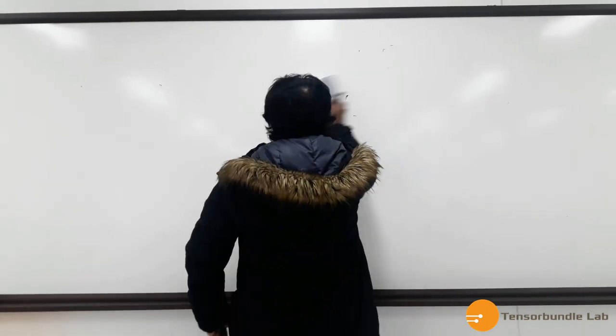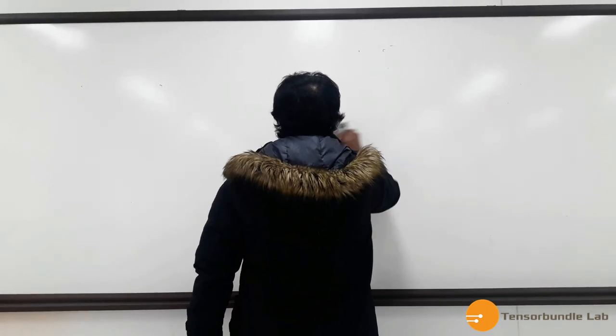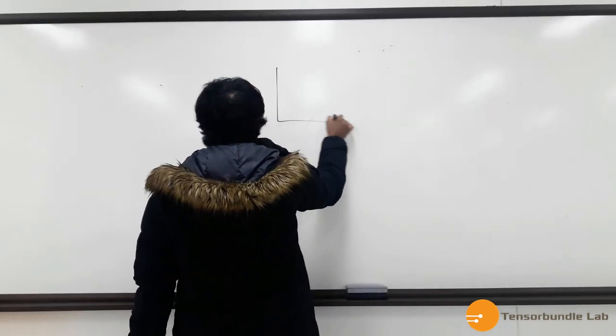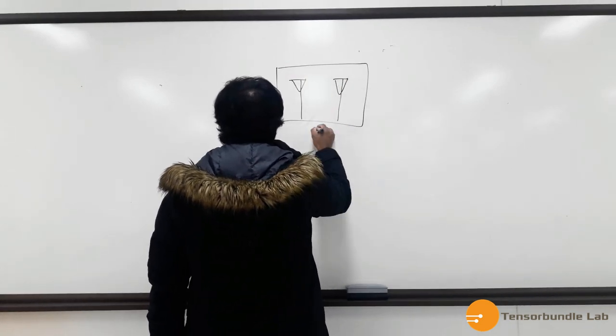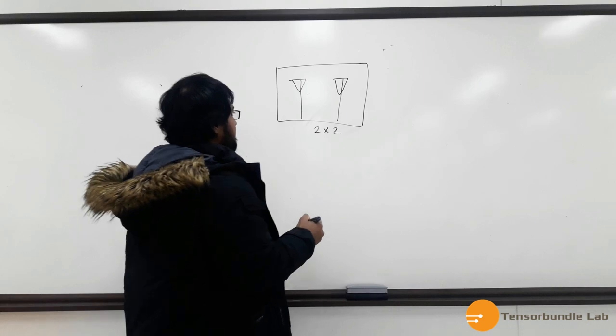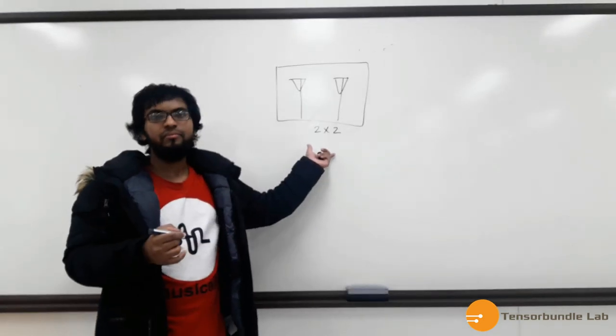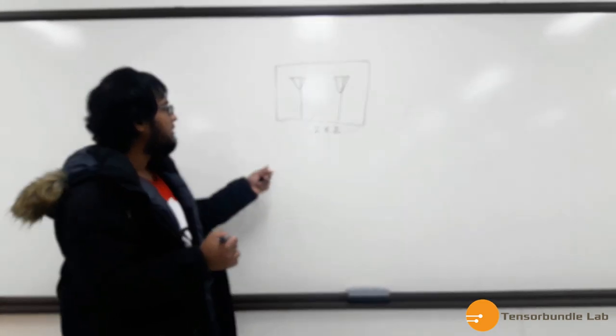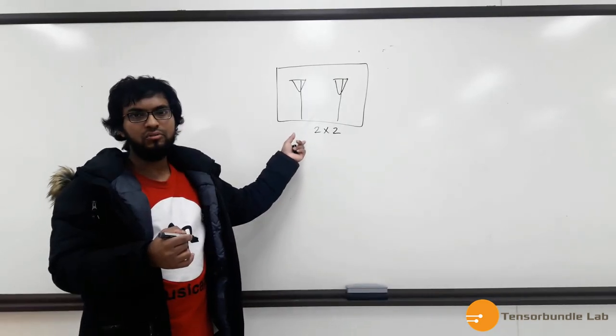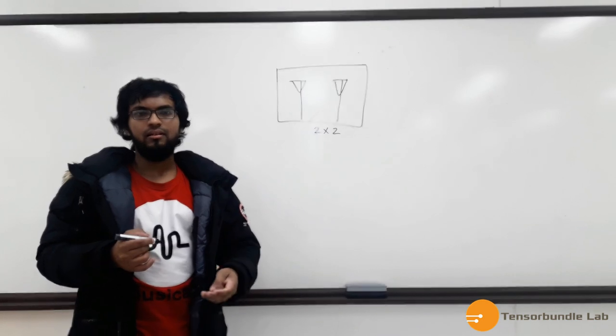So let's discuss CCL first. Imagine we have the simplest case of 2x2 MIMO antenna system. Now this MIMO antenna system can transmit data and the channel capacity is defined as the data rate that can be supported in a particular channel.